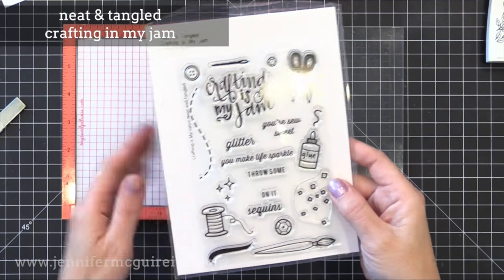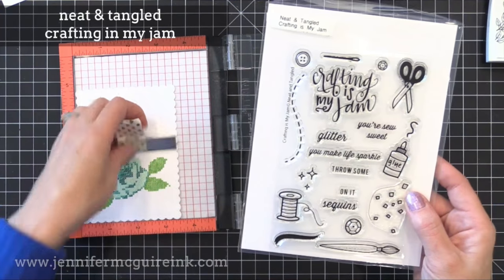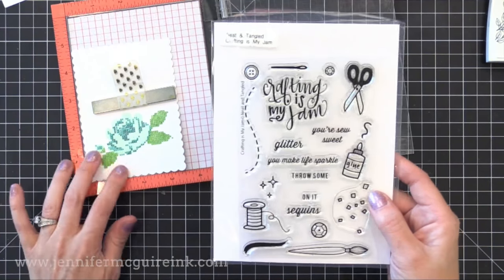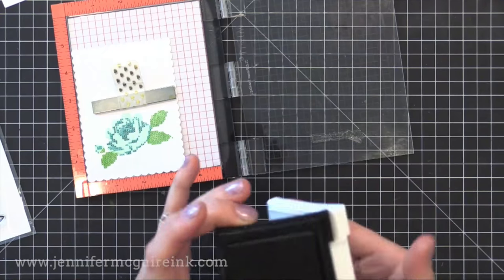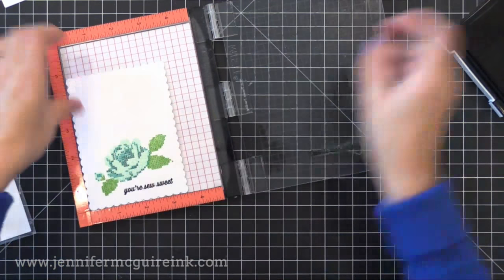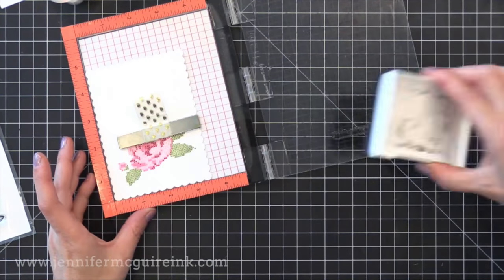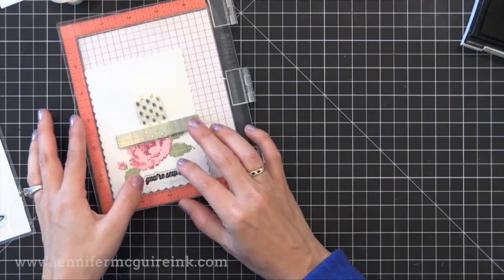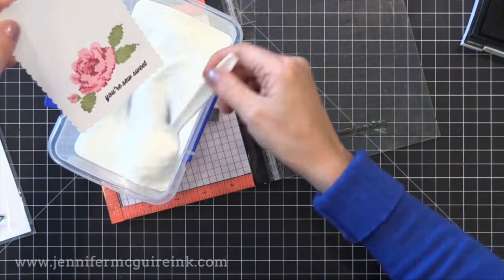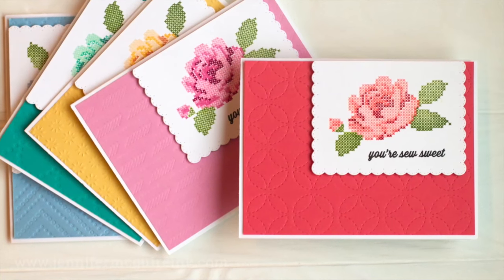I like how the raised look of the embossing powder kind of lends to the cross stitch feel of the pattern. Okay, now it's time to add the sentiment. I decided to use the neat and tangled crafting is my jam sentiment. This is an older one. But I thought the you're so sweet sentiment went nicely with this cross stitch image. I'm gonna stamp this with VersaFine black ink. This is a pigment ink so I can just go ahead and add the embossing powder to it and heat set them all at once. Again, I'm using clear embossing powder. So now everything is nice and raised and shiny on all of those stamped images.